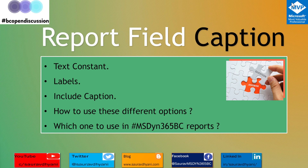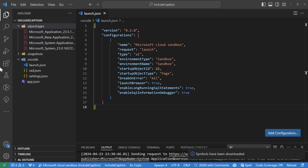In this particular video we'll talk about what are the different ways that you can do field captions in a report - which are text constants, labels, and include captions - and how to use these different options and which one to use in Business Central reports. Based on your requirement you might need all three or just one, but knowing how to use them and how they impact your report performance is a key factor.